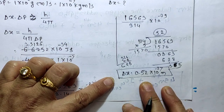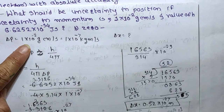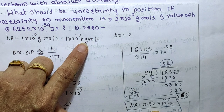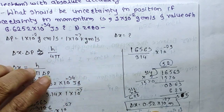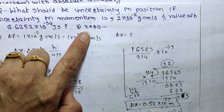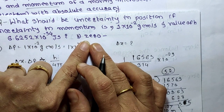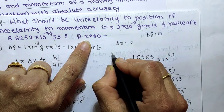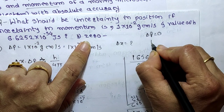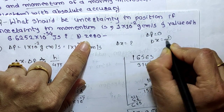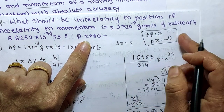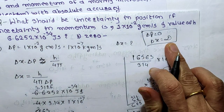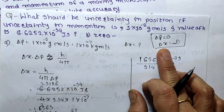If momentum is 0, meaning delta p equals 0, then the value of delta x becomes infinity. Because when delta p is 0, delta x directly becomes infinity — showing that if momentum is known exactly, position is completely unknown.